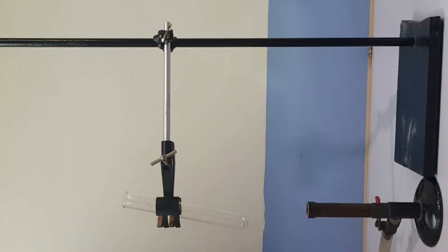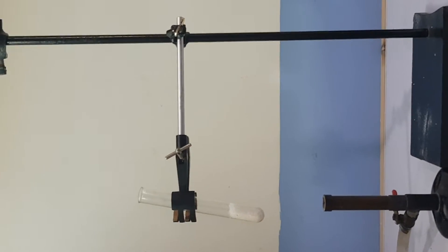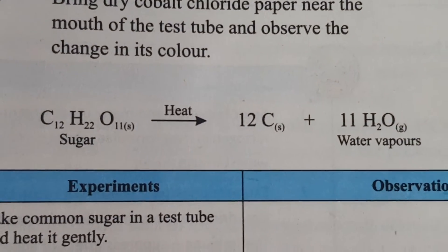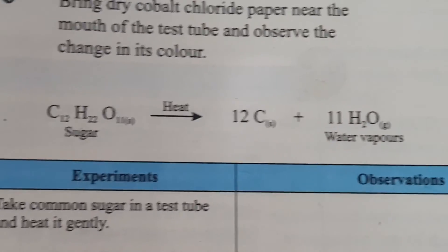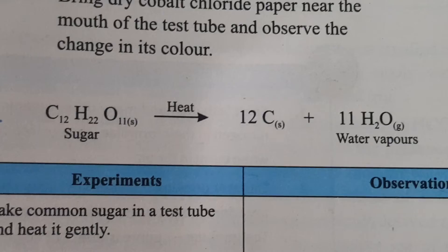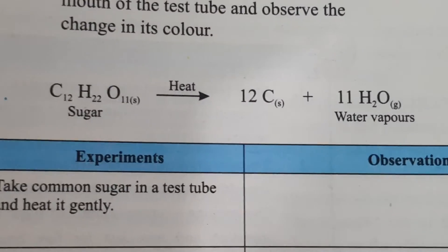Now add sugar to the test tube. We have added sugar into the test tube. When we heat the sugar, it will decompose into carbon and water vapors. The color of the test tube will turn black, which will prove the presence of carbon.